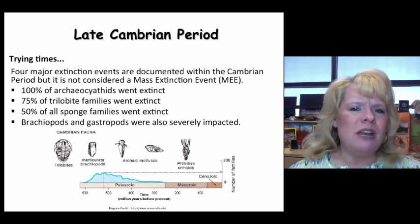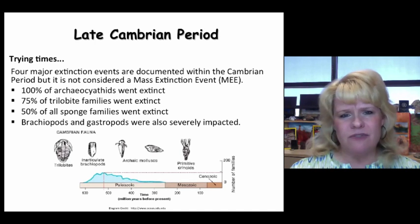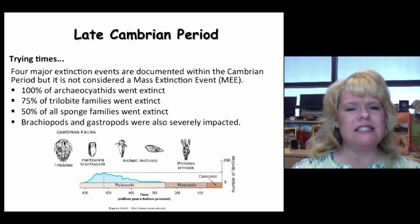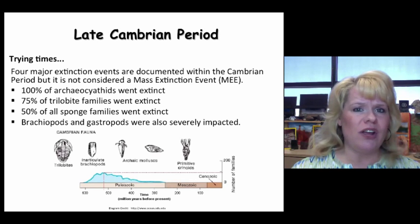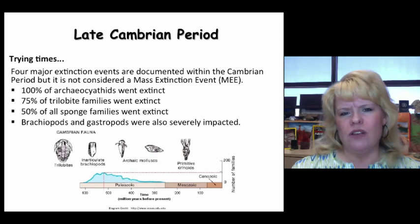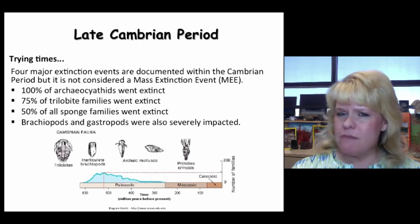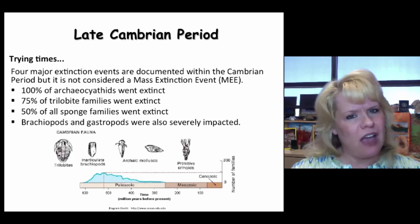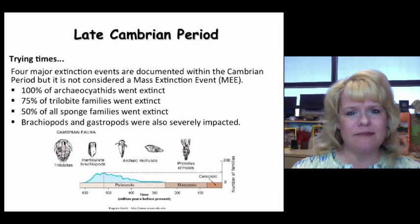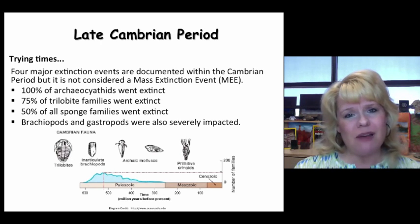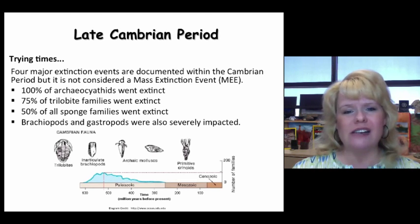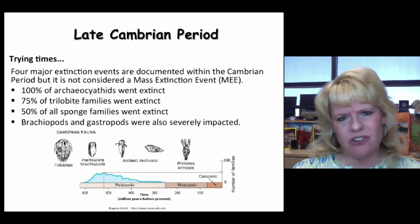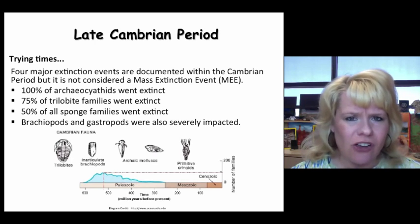The late Cambrian extinction is a very major event — though it doesn't make the hall of fame of the five big mass extinctions. There were four distinctive extinction events in the Cambrian, with the end of the Cambrian being the final blow. 100% of archaeocythids went extinct. 75% of trilobite families went extinct. 50% of all sponge families went extinct. Brachiopods, gastropods, and mollusks also took a serious hit — all due to sea level change and the loss of shallow shelf environments as the Sauk Sea regressed.